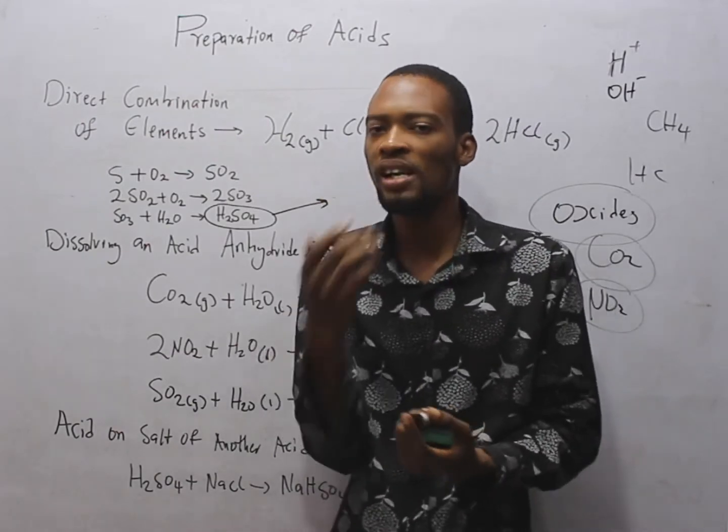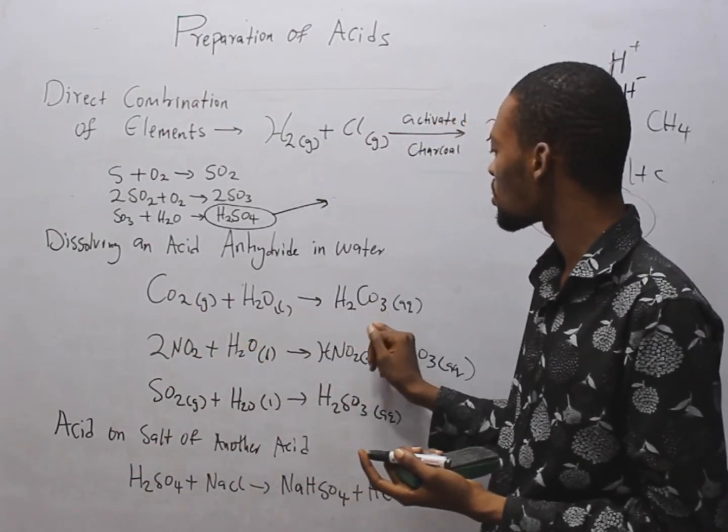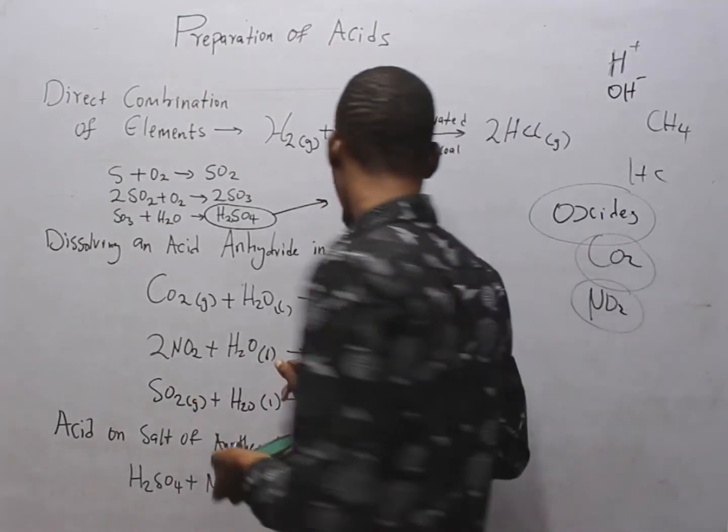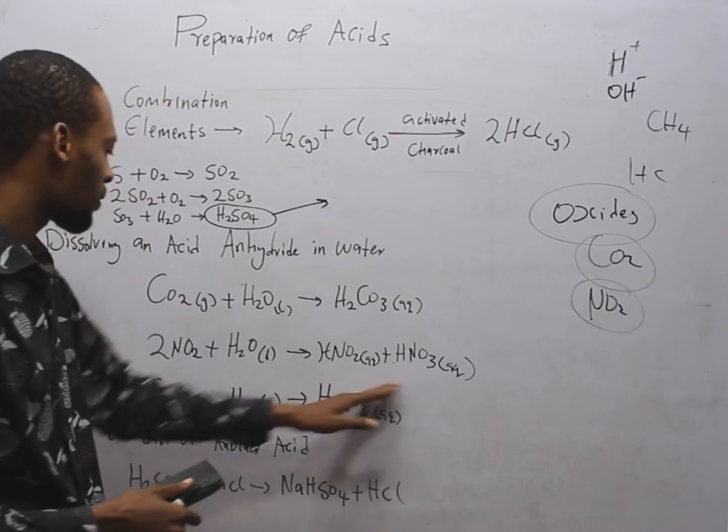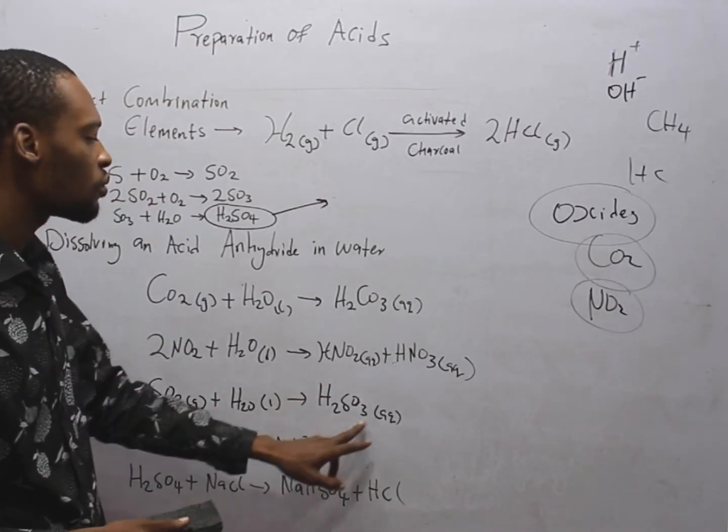They dissolve in water to give acid. So if this dissolves in water, it gives you H2CO3. If NO2 dissolves in water, it gives you HNO2 and HNO3. If SO2 dissolves in water, it gives you H2SO3.